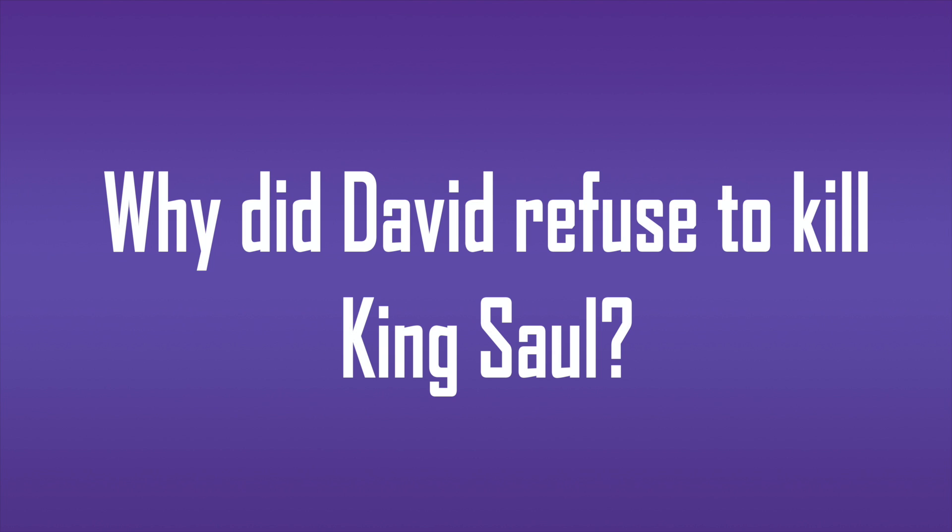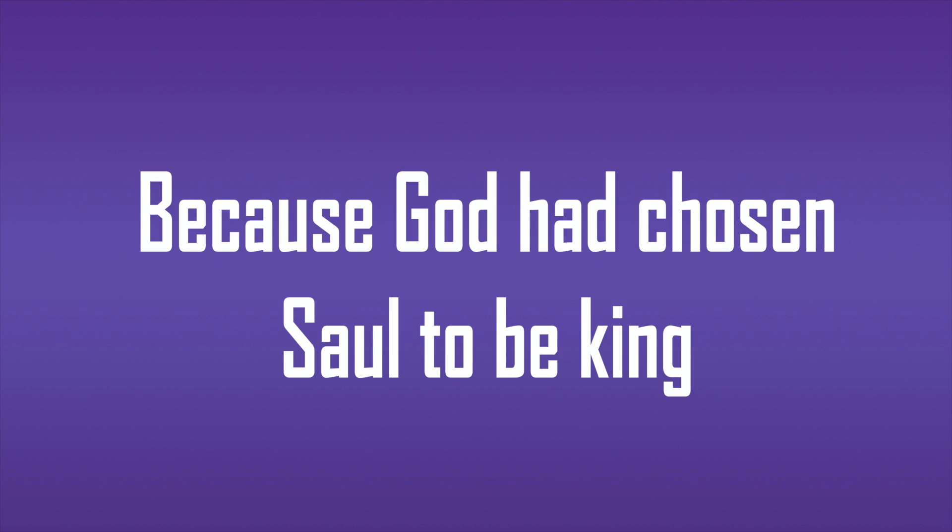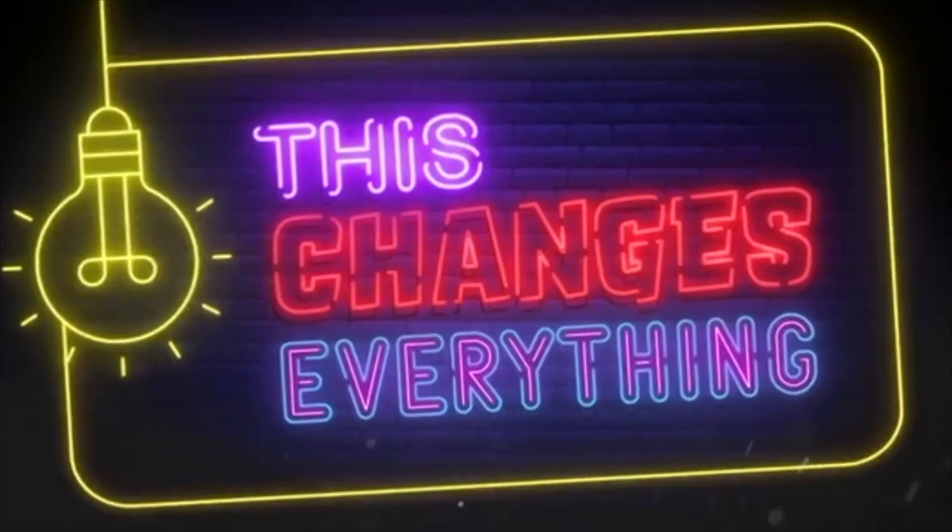Let's play again. Pick a pose. If you pick one arm, then you're the winner. Now let's see if you can answer this last JBQ question: Why did David refuse to kill King Saul? If you answered because God had chosen Saul to be king, then you're correct. Good job JBQ.